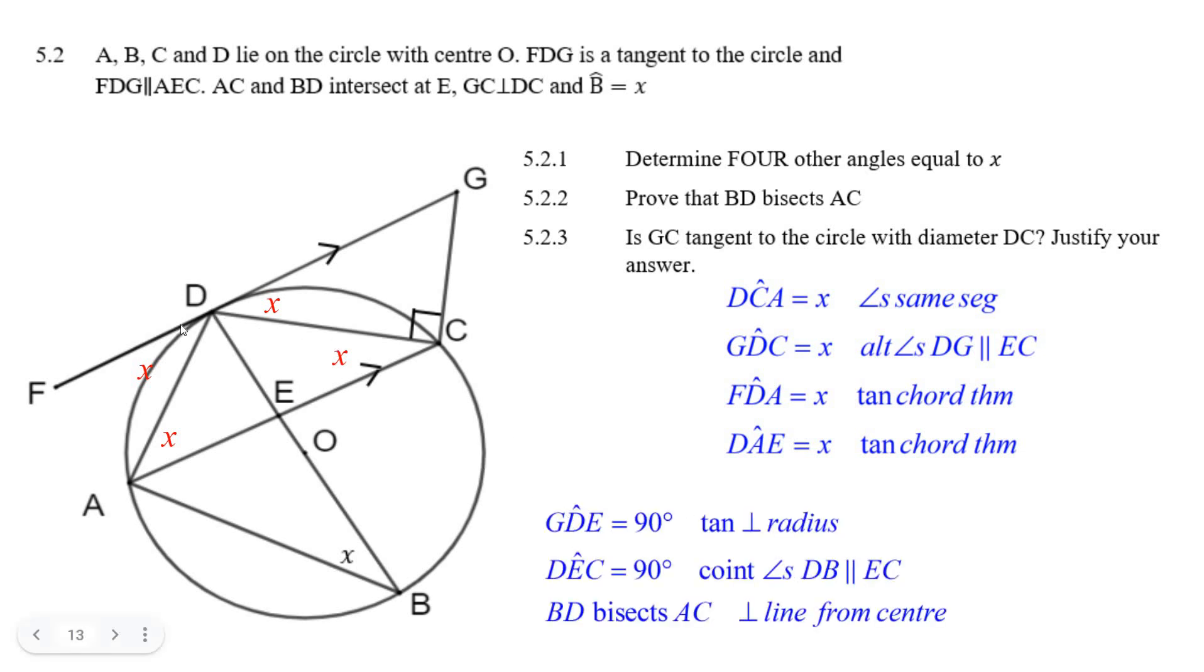G, D, E. We know that it's 90 degrees because a tangent is perpendicular to the radius. This is a diameter, so it's perpendicular to the radius.